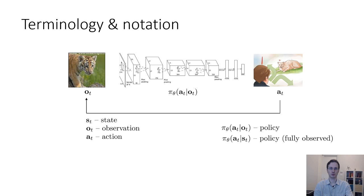When we're doing deep reinforcement learning, oftentimes we will represent the policy with a deep neural network, although as we will learn in the next two lectures in the course, depending on the type of reinforcement learning algorithm, we might choose to represent the policy directly or implicitly through some other object, such as a value function.